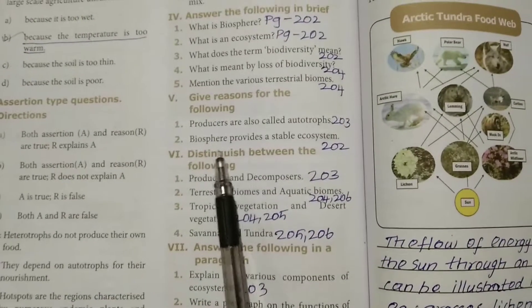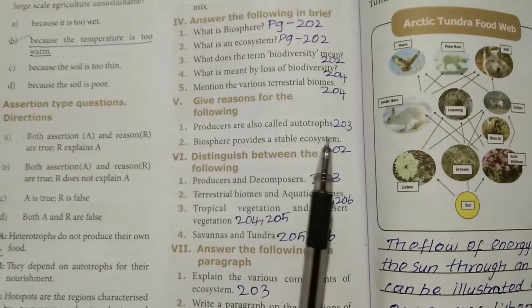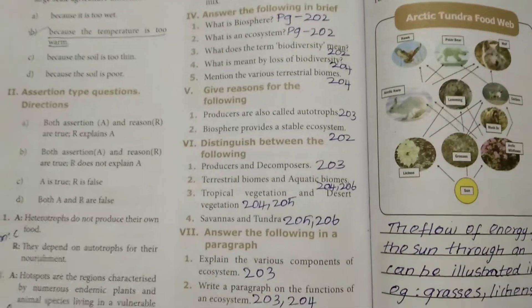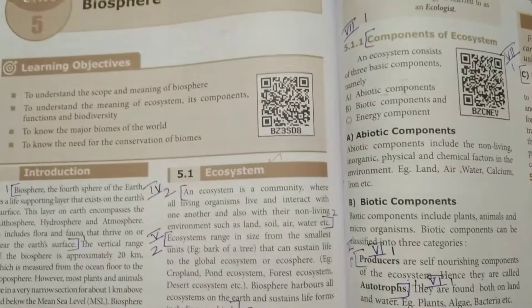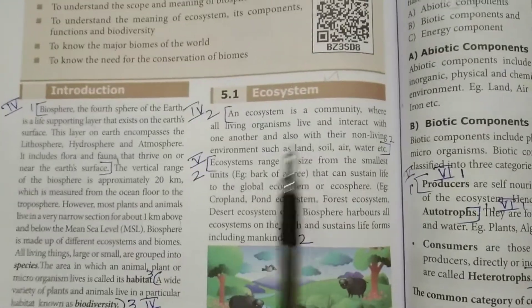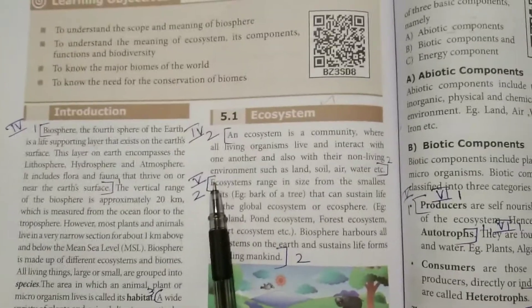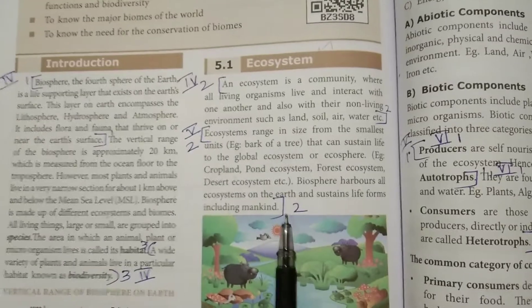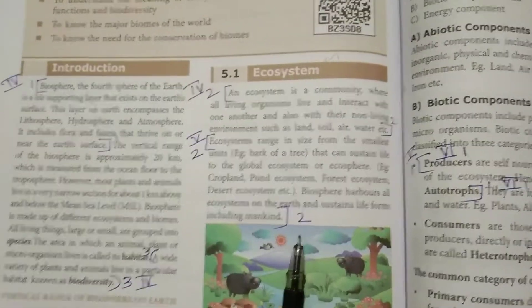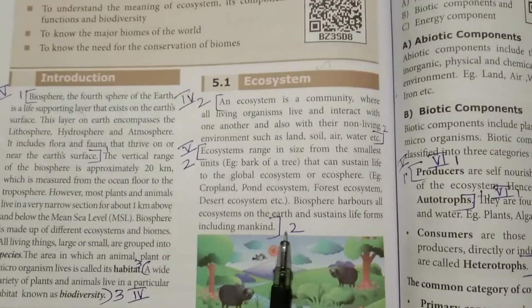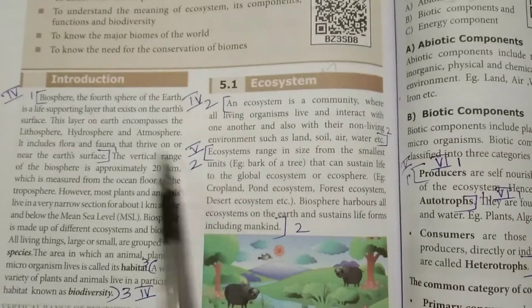Second question: biosphere produces a stable ecosystem. Page number 202. Under the ecosystem heading, mark the fourth line of that paragraph as the answer.